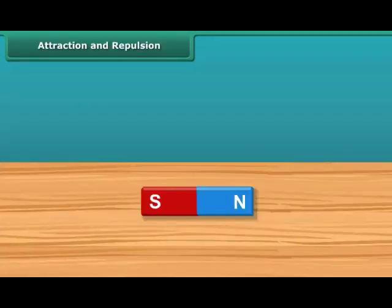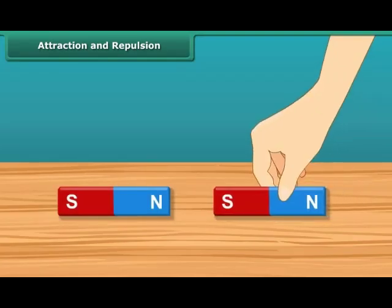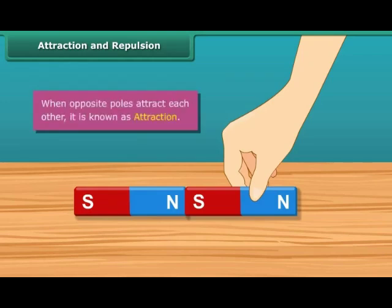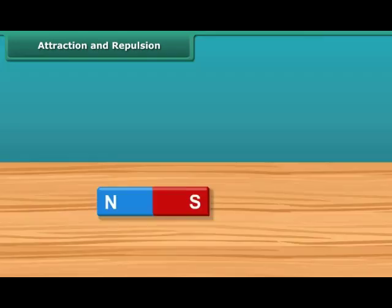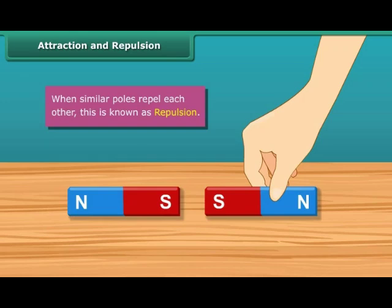Now that you know about poles of a magnet, let us look at the attraction and repulsion properties too. In the case of magnets, when the south pole comes in contact with the north pole, these get attracted to each other. This is better known as opposite poles attracting each other. Similarly, when the south pole comes in contact with another south pole of a magnet, they do not attract each other — in fact, they repel each other. This is better known as similar poles repelling each other.